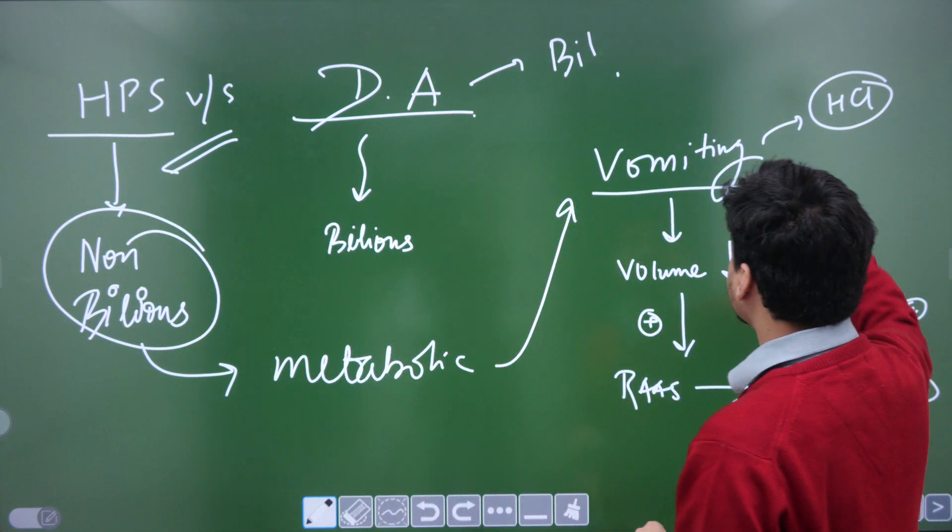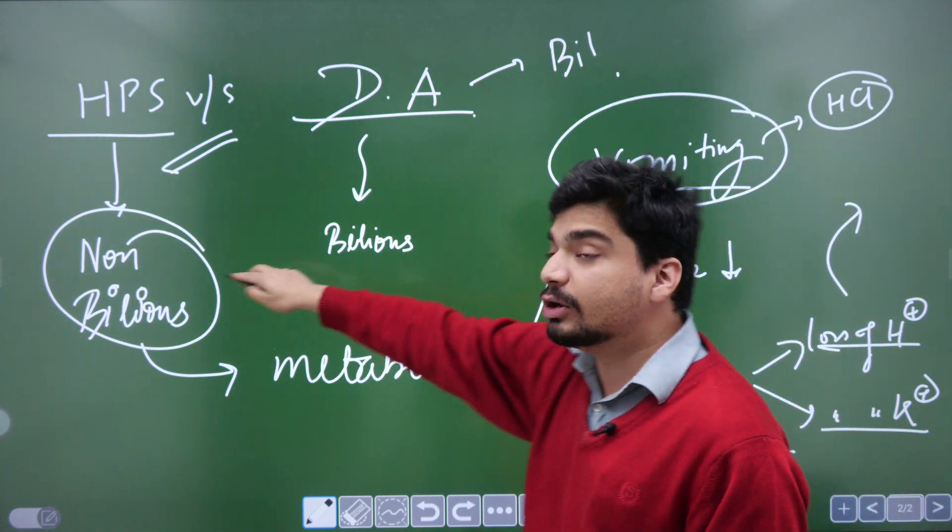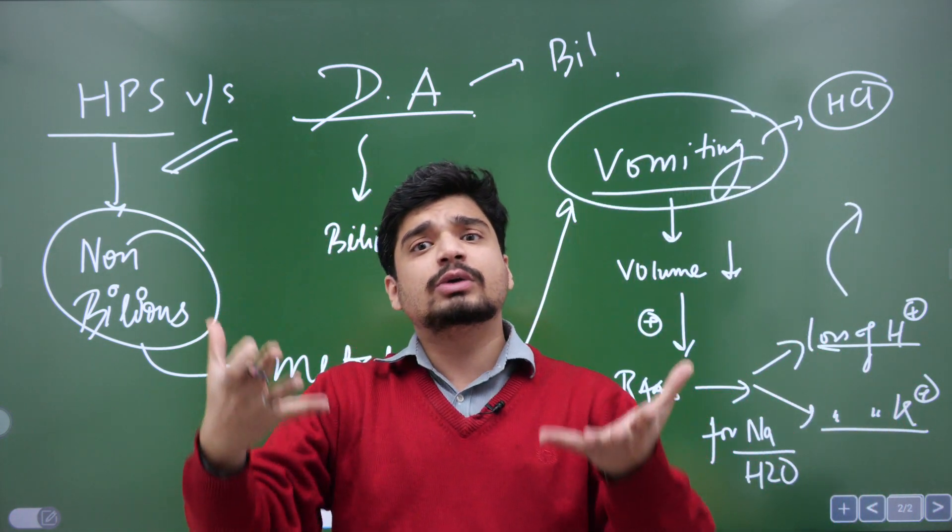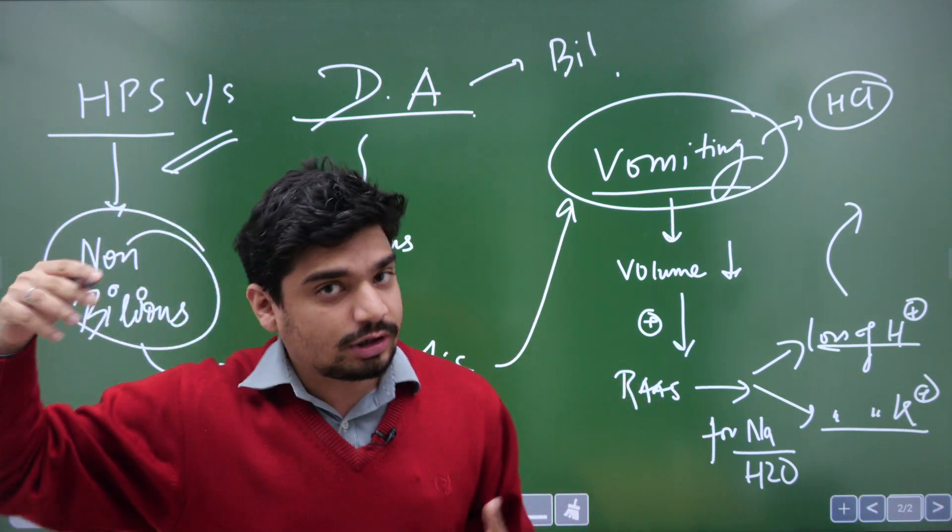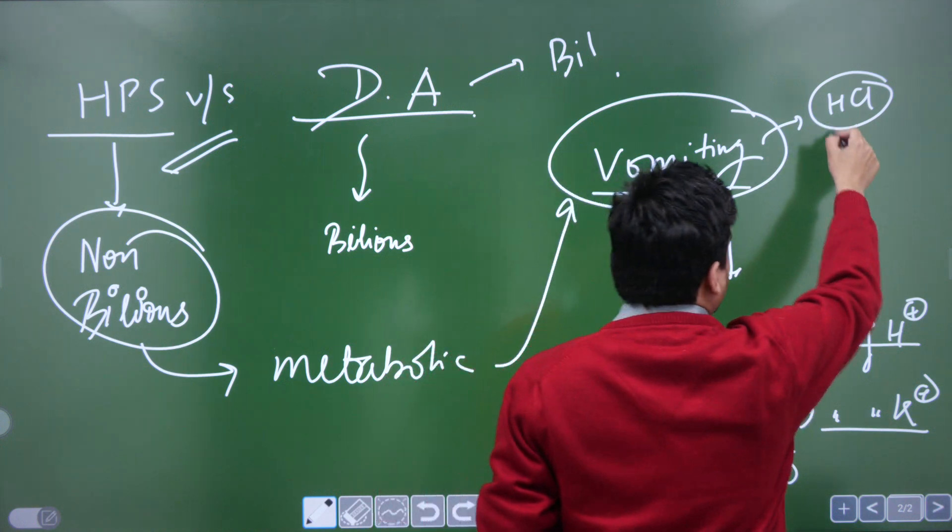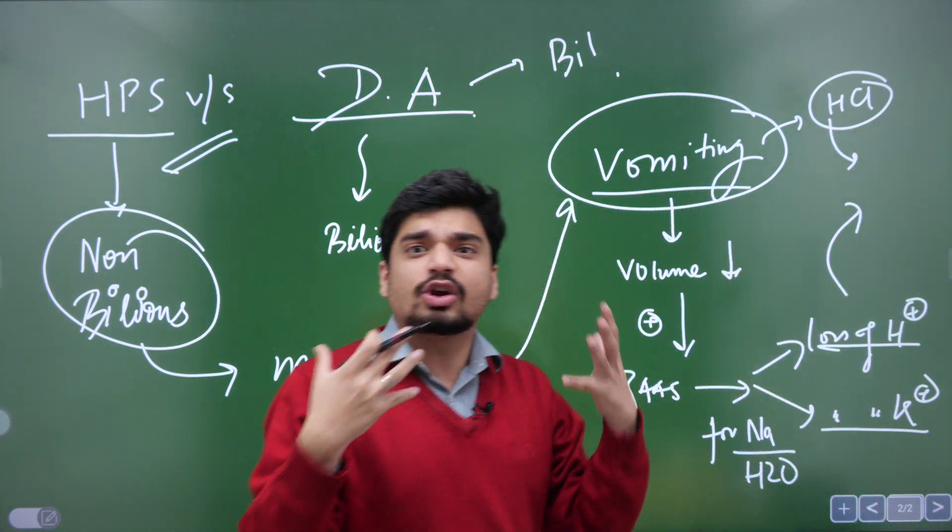So what happens is, as far as hypertrophic pyloric stenosis is concerned, there will be non-bilious vomiting. The child will vomit out the stomach contents. What is being vomited out? The stomach contents - that's HCl, your hydrochloric acid.